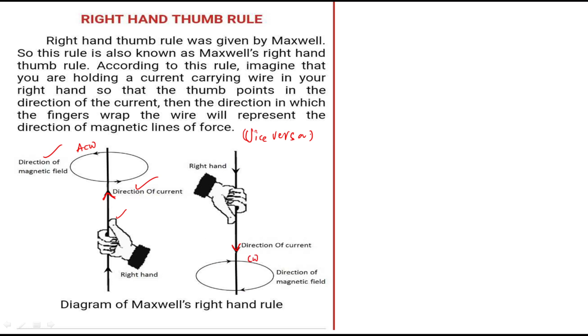And this is vice versa. For example, if the thumb represents the direction of magnetic field, obviously the direction of current should be represented with curved fingers.